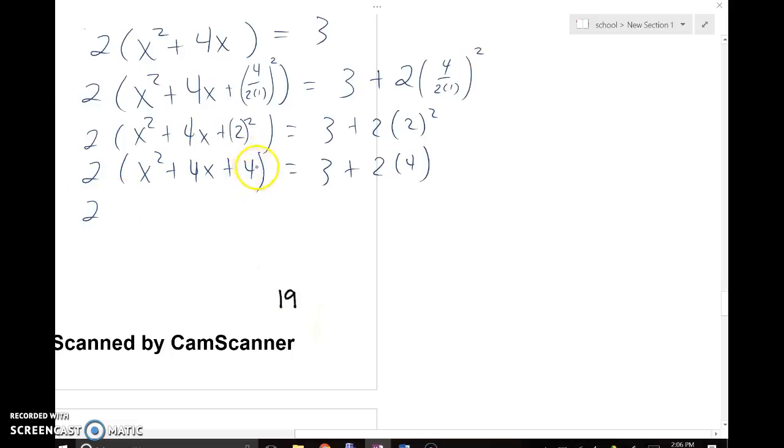This is going to factor really nicely. Remember, we said the square root of that is the number that repeats itself. This number is positive, so (x + 2)(x + 2). On my right side, 2 times 4 is 8, 3 plus 8 is 11.